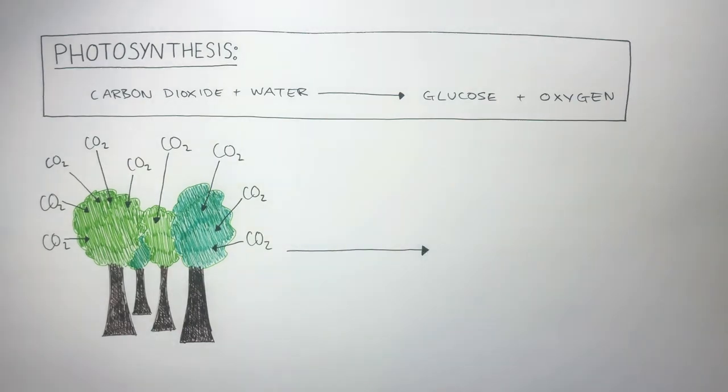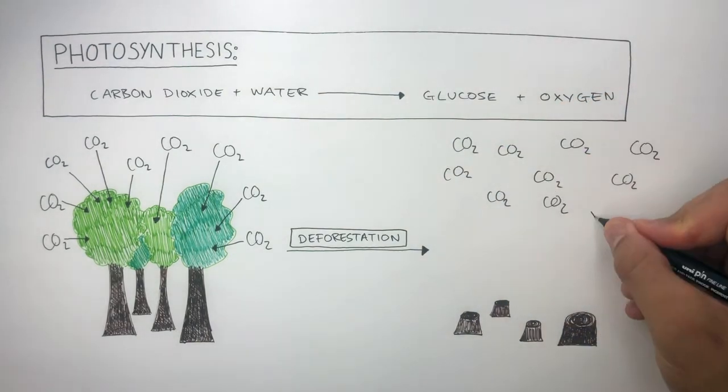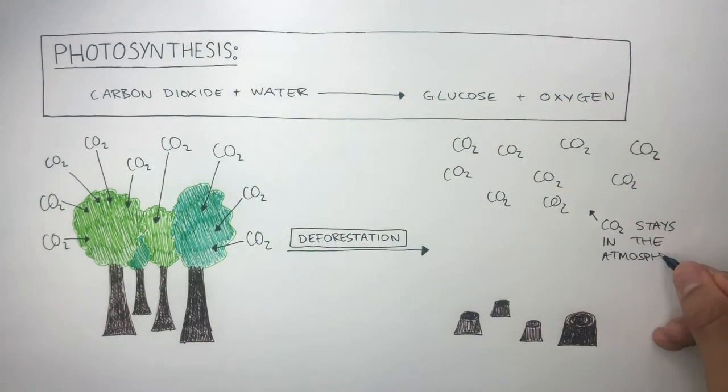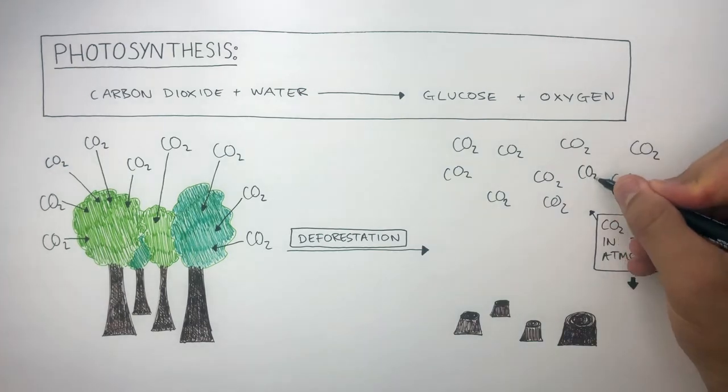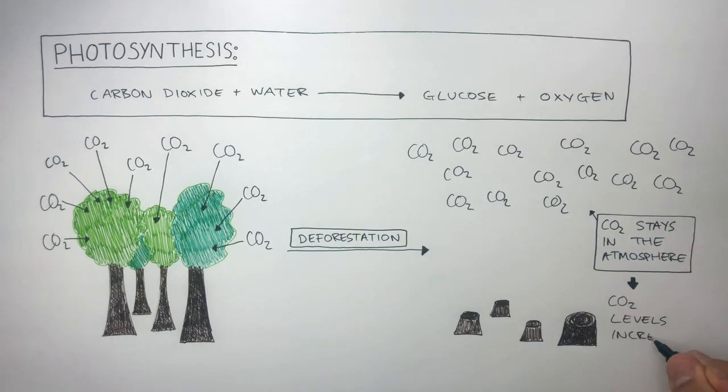However, if deforestation takes place, which is the cutting down of trees, any carbon dioxide that's in the atmosphere will stay in the atmosphere, as the cutting down of trees means the carbon dioxide is not able to be absorbed or taken in by the trees. So let's say more carbon dioxide is added to the atmosphere due to respiration and combustion. Because photosynthesis cannot take place, this means carbon dioxide levels increase.